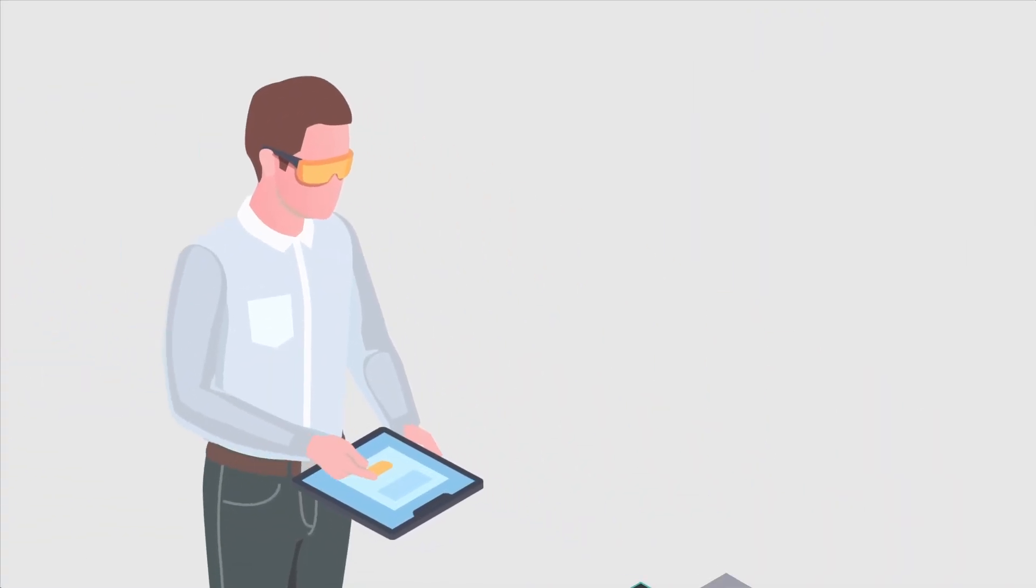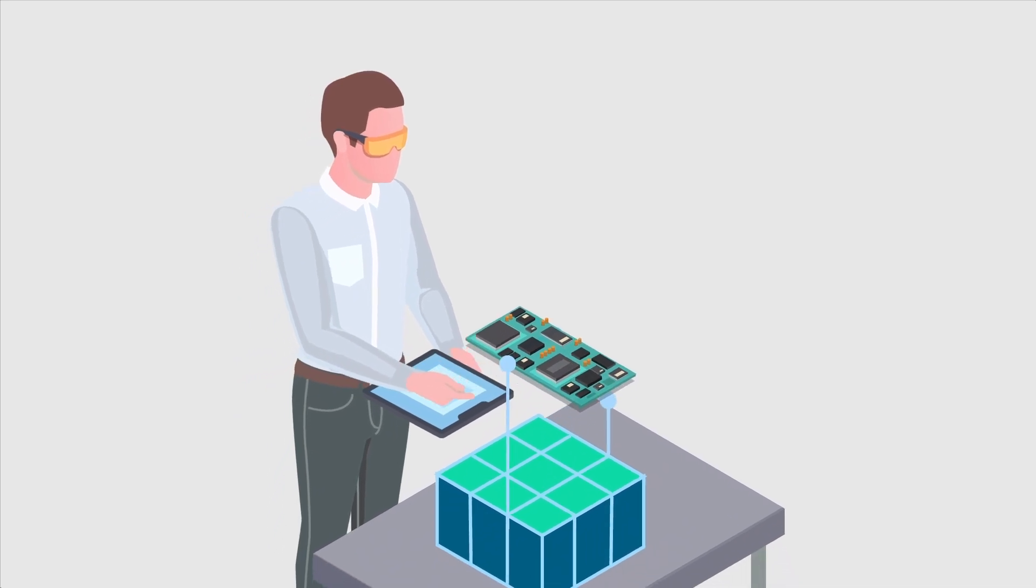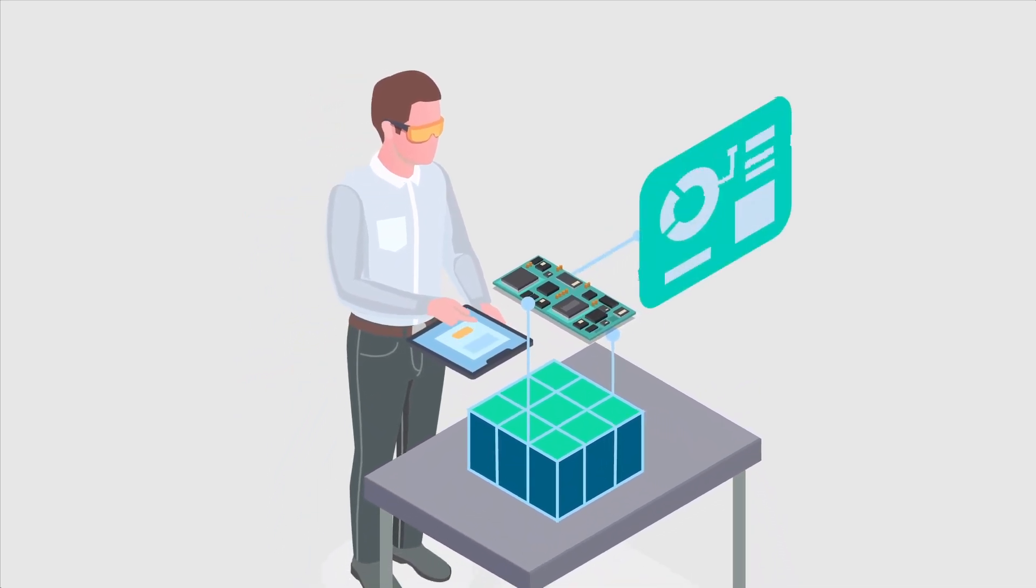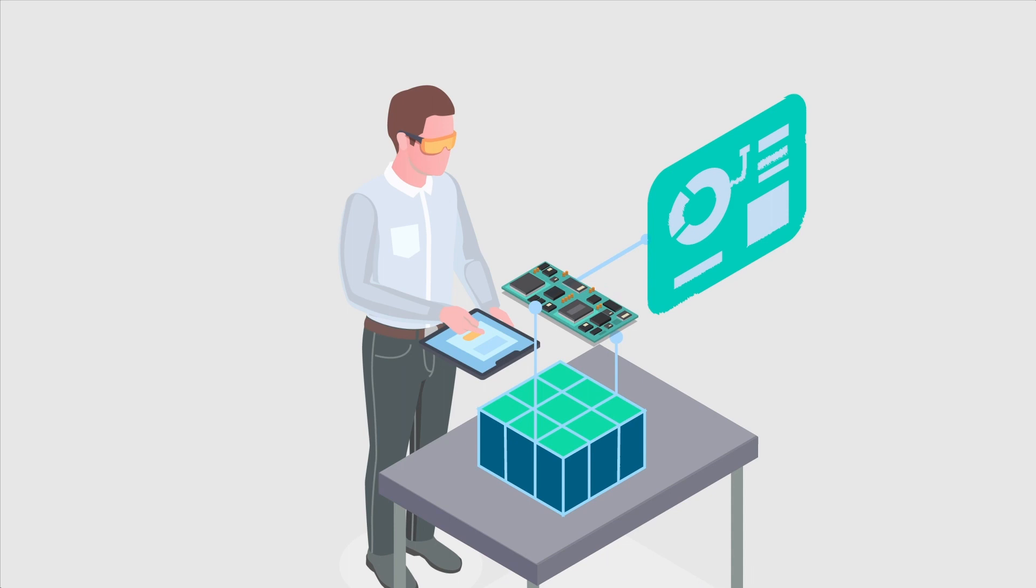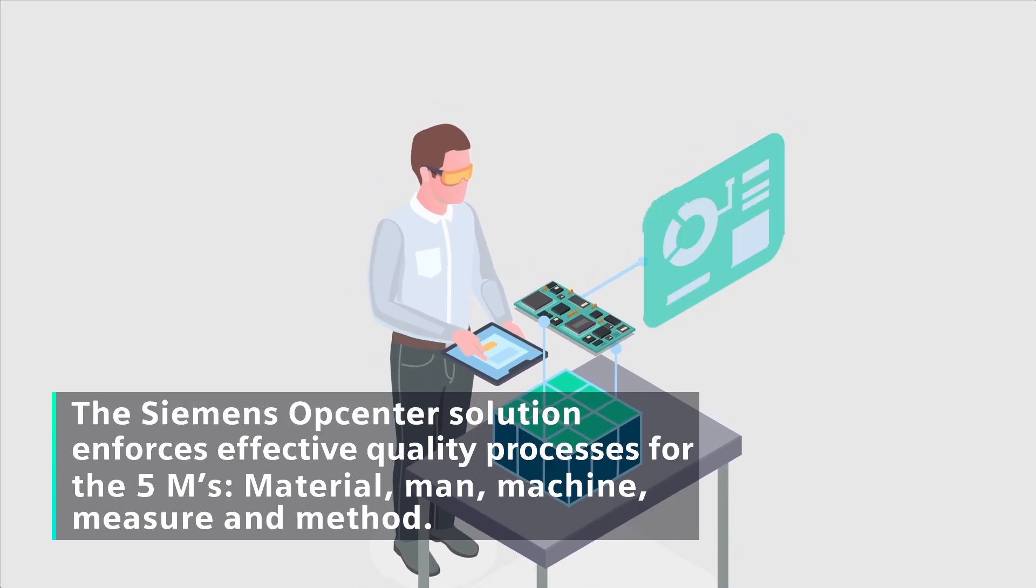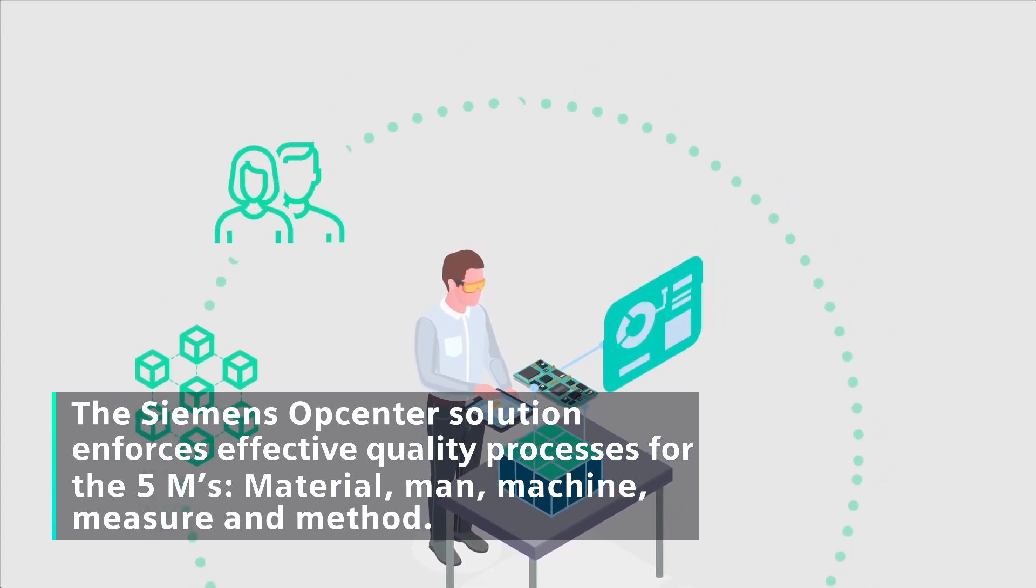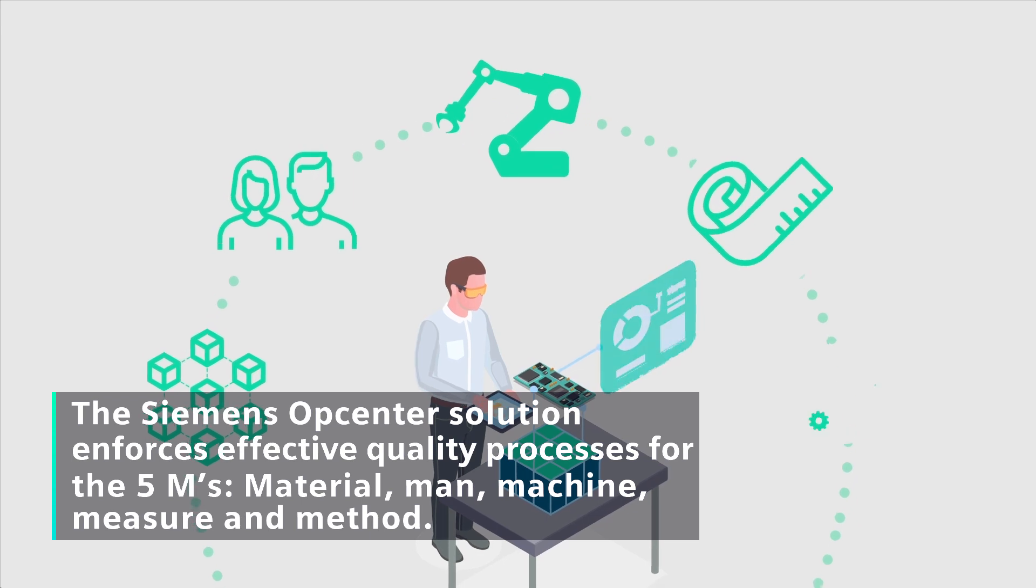The Siemens OpCenter solution is essential to achieve excellence in manufacturing processes. It eliminates paper, creating an electronic DHR (EDHR), and enforces effective quality processes for the five M's: Material, Man, Machine, Measure, and Method.